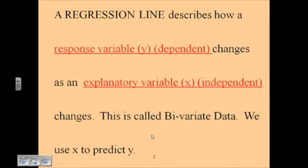So we're going to start off. A regression line describes how a response variable, remember response variables are the y, they are the dependent variables, how they change as an explanatory variable or the x, the independent variable, changes. We call this bivariate data because we have two different variables, and we are using x to predict y.